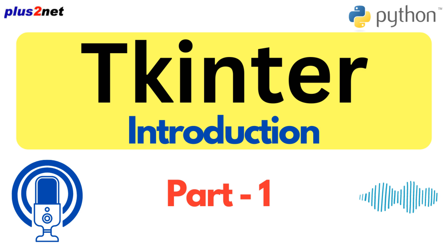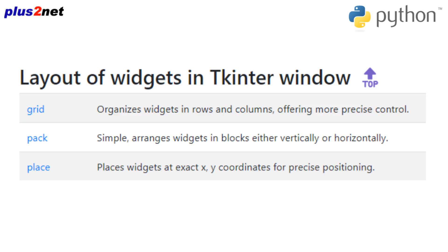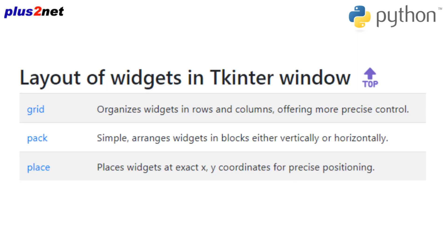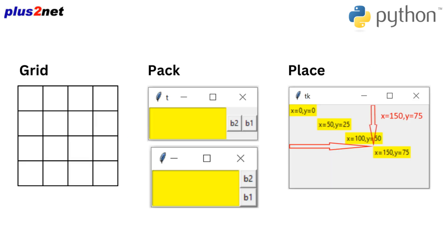The next question is layout — how do you arrange all these widgets so they're not just scattered all over the place? You don't want your interface to look like a digital junk drawer. That's where layout management comes in. Tkinter gives you a few options: Grid is great for grid-like layouts — rows and columns, nice and neat, like a spreadsheet. Pack is more about packing widgets together tightly. And Place gives you really precise, pixel-perfect control over where each widget goes.